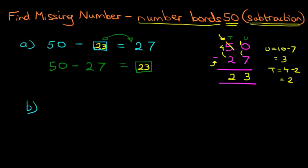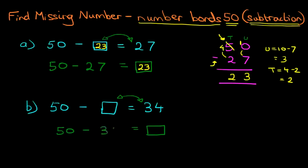Okay, let's have a look at a second example. We've got 50 minus something equals 34. Now again, we're going to swap these around. Therefore, the missing number is on one side of the equals. And on the other side, we have 50 minus 34.